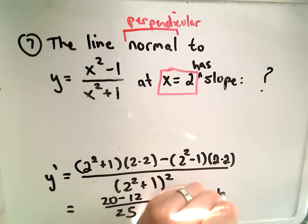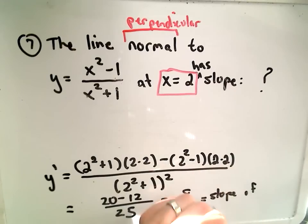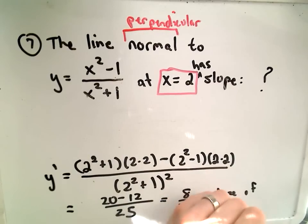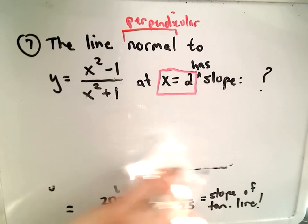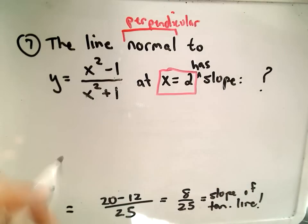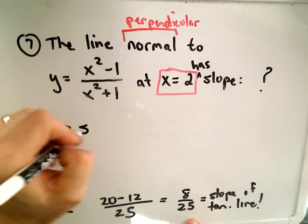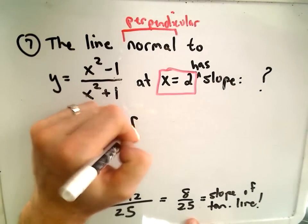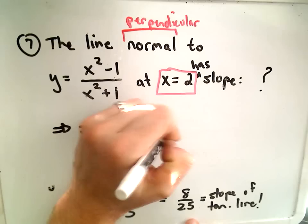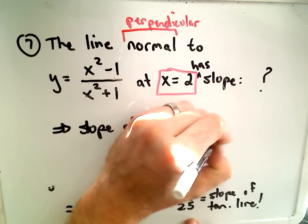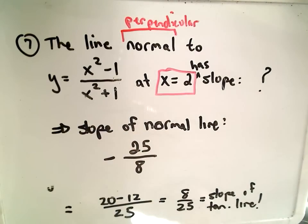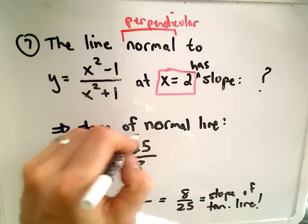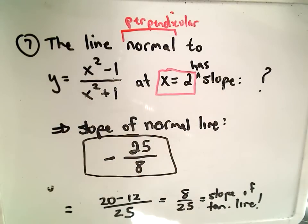This is the slope of the tangent line. The slope of the normal line is perpendicular to the slope of the tangent line, so the slope of the normal line would simply be — we flip the fraction and change the sign. That gives us negative 25 over 8 as the slope of the normal line.